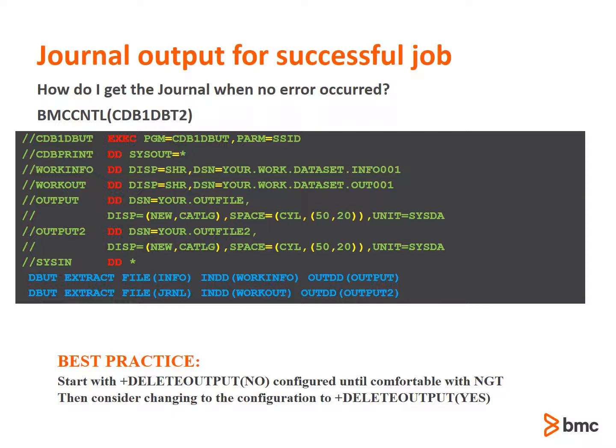Sometimes it may be necessary to get the journal output for a job that ends successfully. You might have a job that completes successfully, but you're concerned with its elapsed time or some other performance factor, and you'd simply like to investigate. The JCL shown here can provide you the journal output for a successful job. A copy of this job is provided for you in the BMC control PDS in the CDB1-DBT2 member for this purpose. This job is similar to a VSAM Repro for the purpose of retrieving and providing journal output of a successful job.